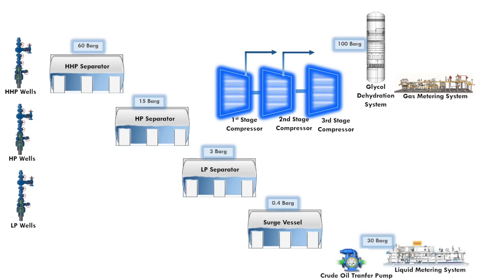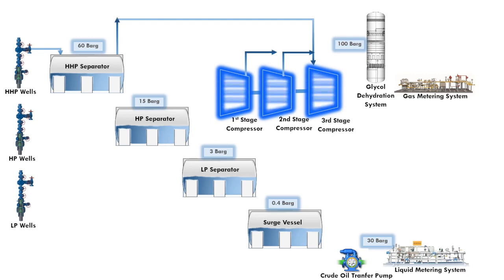The production from high high pressure wells, or simply known as HHP wells, flows to the HHP separator. The pressure is reduced using a pressure control valve at the top of the HHP separator. The gas discharged from the top of the separator will enter the inlet of the third stage compressor.